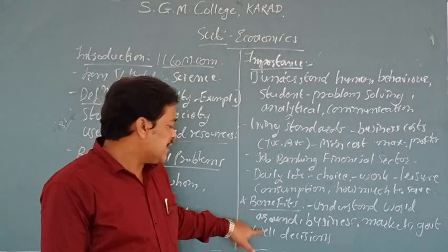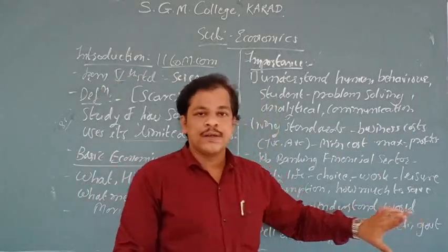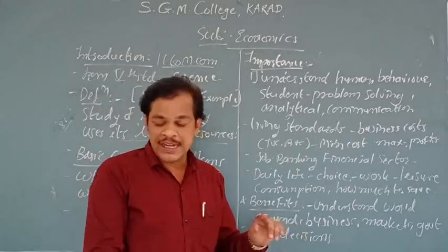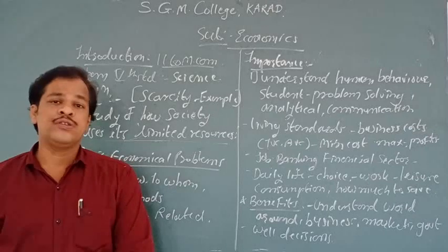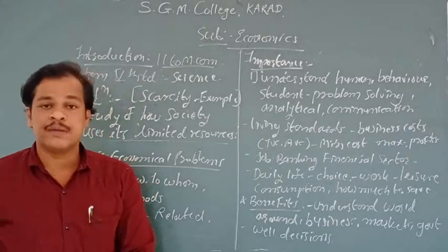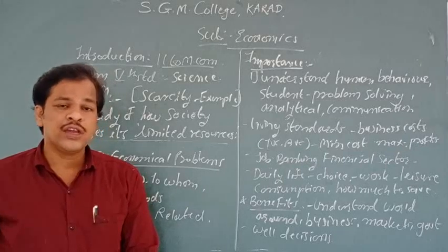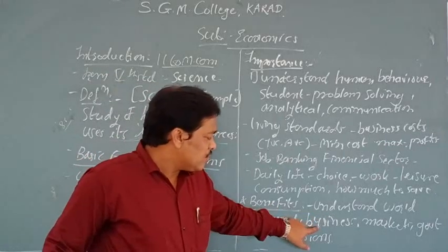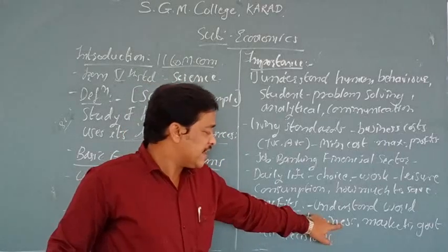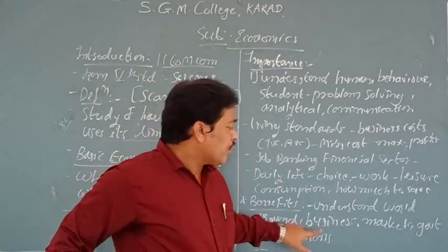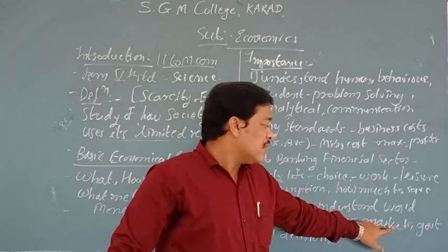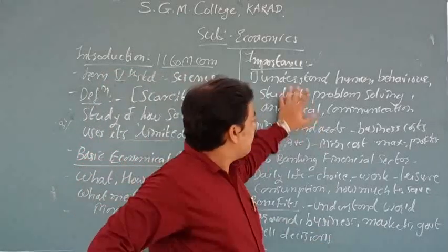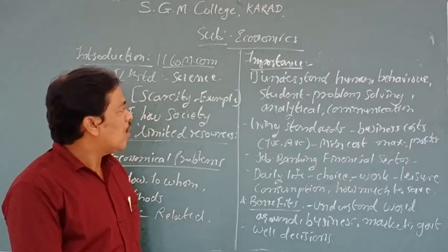The last point is about benefits: understanding the world around you. If you have knowledge of economics, you can understand what is happening — how the economy is going. For example, now we are facing the problem of COVID-19, so you can understand that world economy is facing many problems, even the Indian economy — problems like unemployment, fall in GDP, and reduction in national income. If you have knowledge, you can see and understand the world around you, see what kind of business strategies are there, what kind of government decisions there are and whether those decisions are going to affect you. With the help of economics, you can take the best decisions in your life.